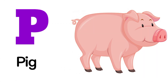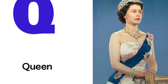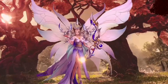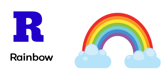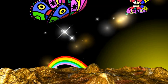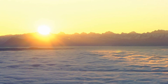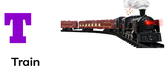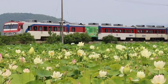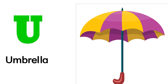B for Pig. Q for Green. R for Rainbow. S for Sun. T for Train. U for Umbrella.